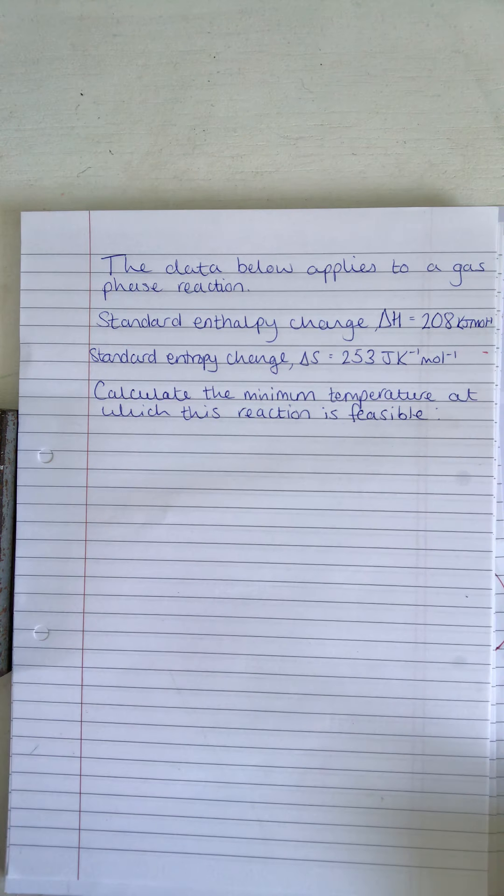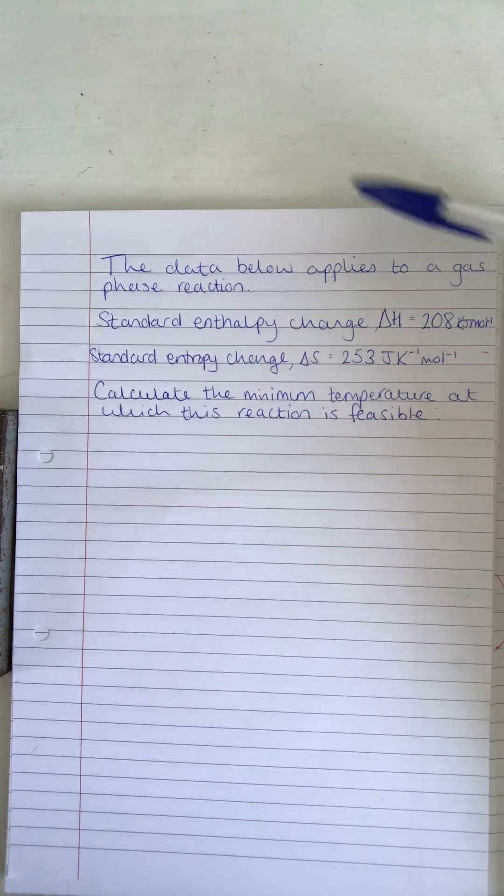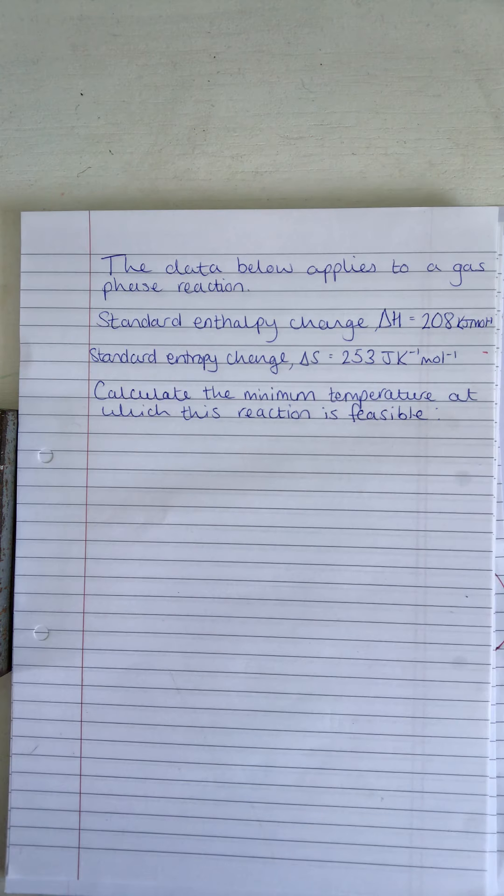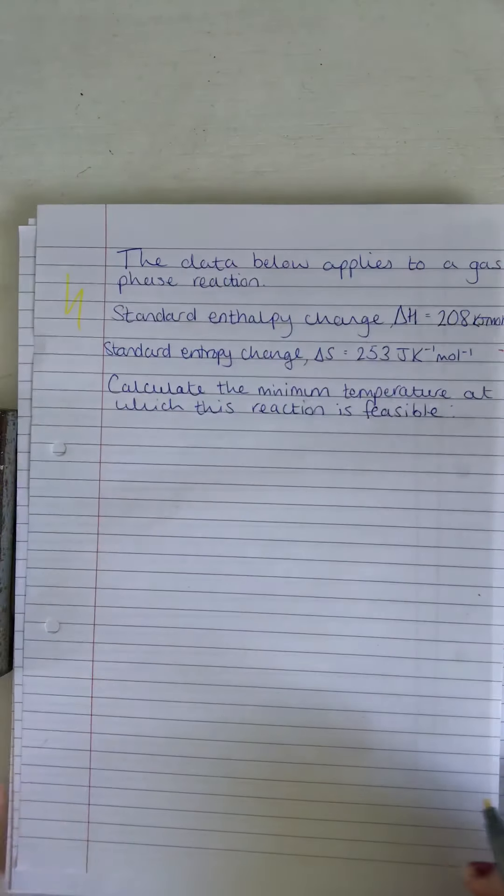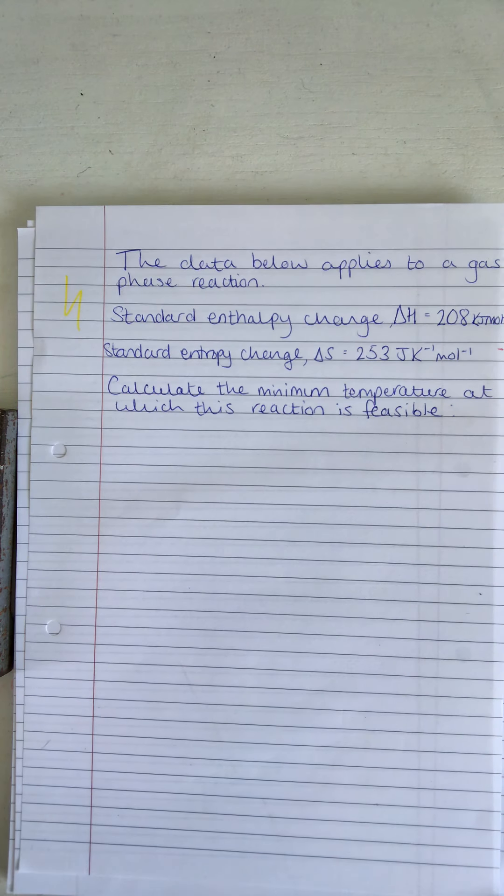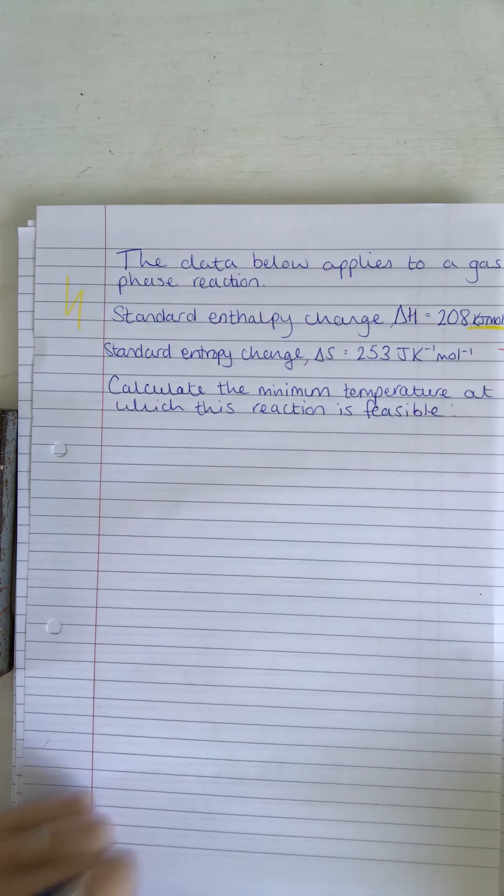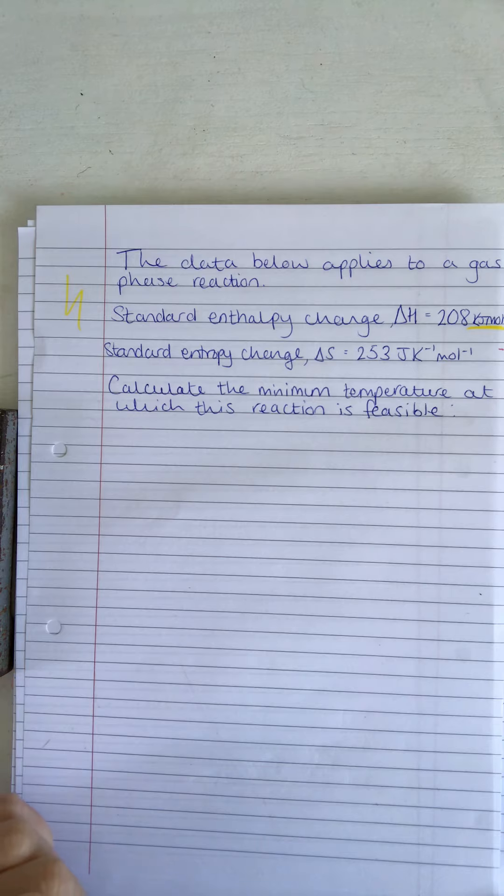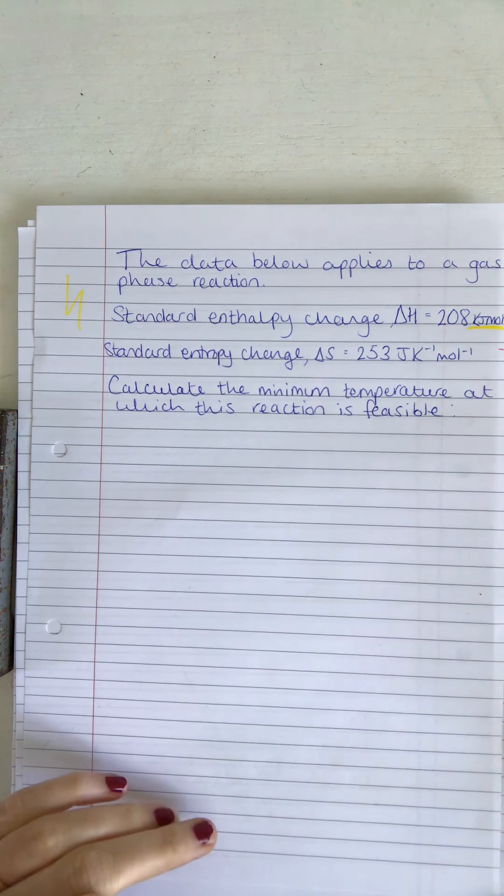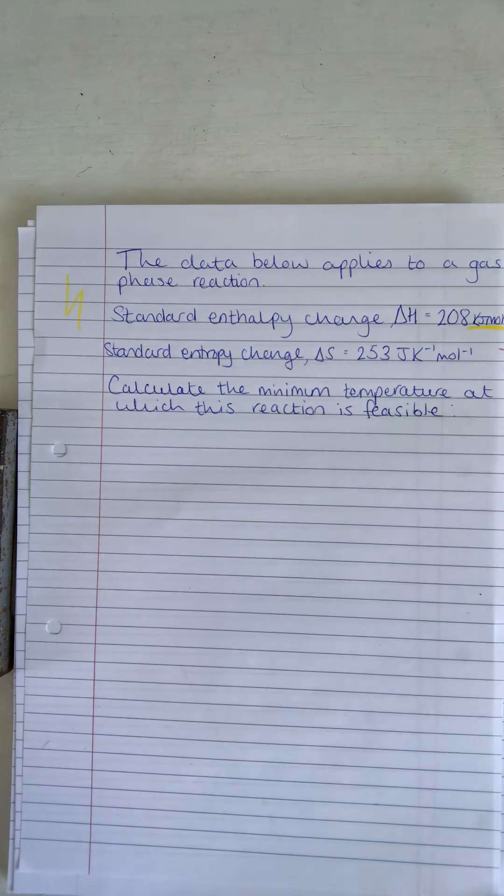So the task says the data below applies to a gas phase reaction. Standard enthalpy change is 208 kilojoules per mole. I'm going to highlight that because it's important to highlight your units, because there is going to be a unit conversion here, so it just gives us a minute to stop and think, do I need to divide or times anything by a thousand.